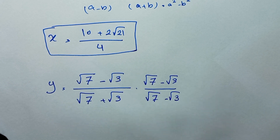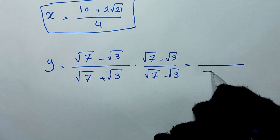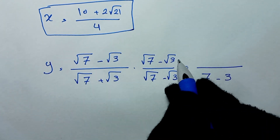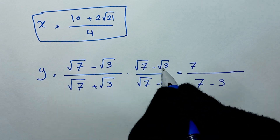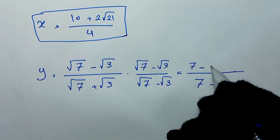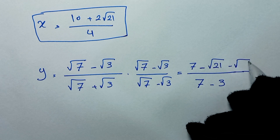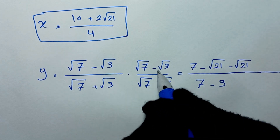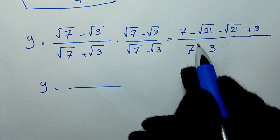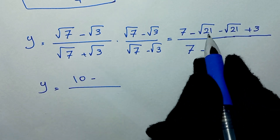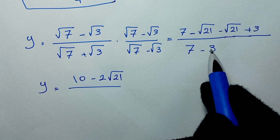For y, we have square root of 7 minus square root of 3 over square root of 7 plus square root of 3. The denominator is also in the form a minus b times a plus b, giving 7 minus 3 equals 4. For the numerator, we get 7 minus square root of 21 minus square root of 21 plus 3, so y equals 10 minus 2 square root of 21 over 4.